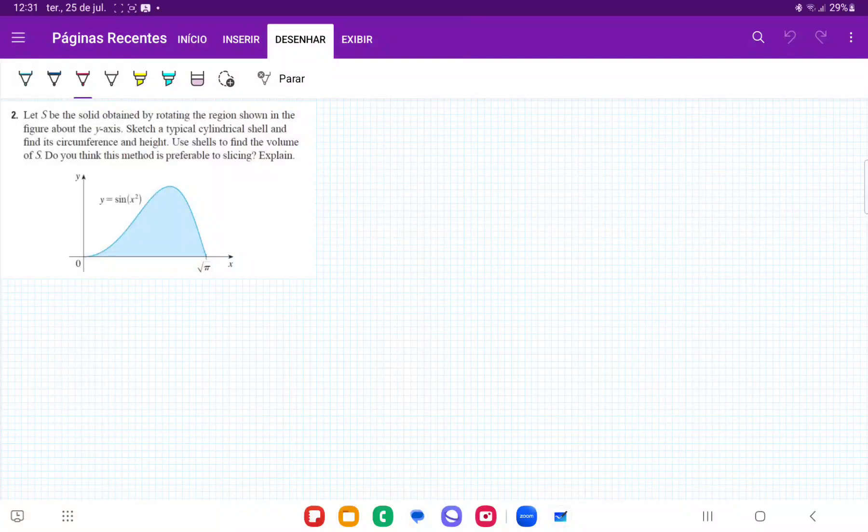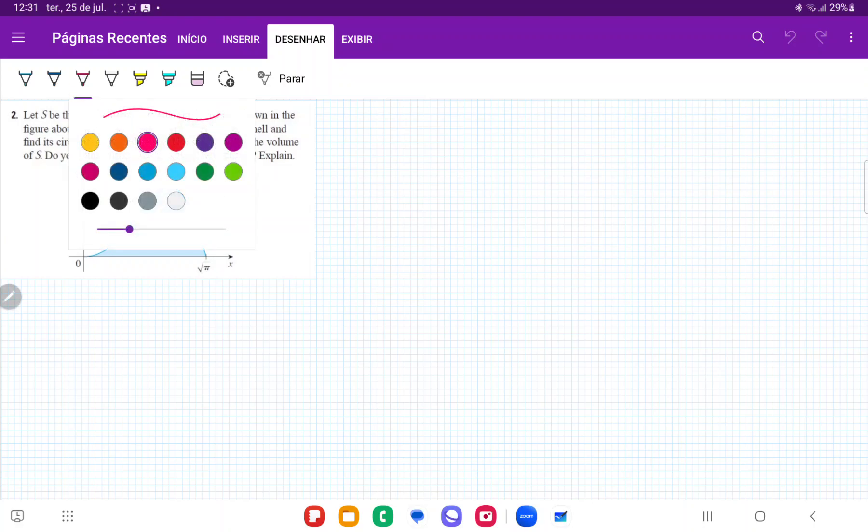So for number two, we want to rotate the area beneath this blue curve about the y-axis, and we're going to use the shell method to do it.